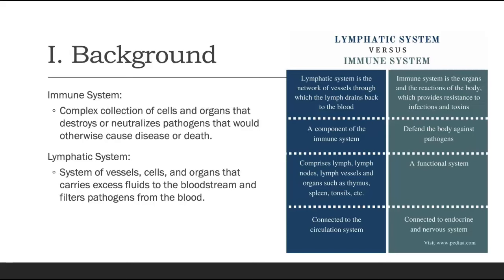Our lymphatic system is similar to our circulatory system in that we have vessels that work together. Within them, we have cells and organs that help carry excess fluid to our bloodstream, specifically our venous system, and also filter for pathogens from our blood. Although we could talk about these two systems distinctly, they are very much intertwined, especially because within our lymphatic system, organs such as our lymph nodes or the spleen contain immune cells, helping to defend the body from pathogens.